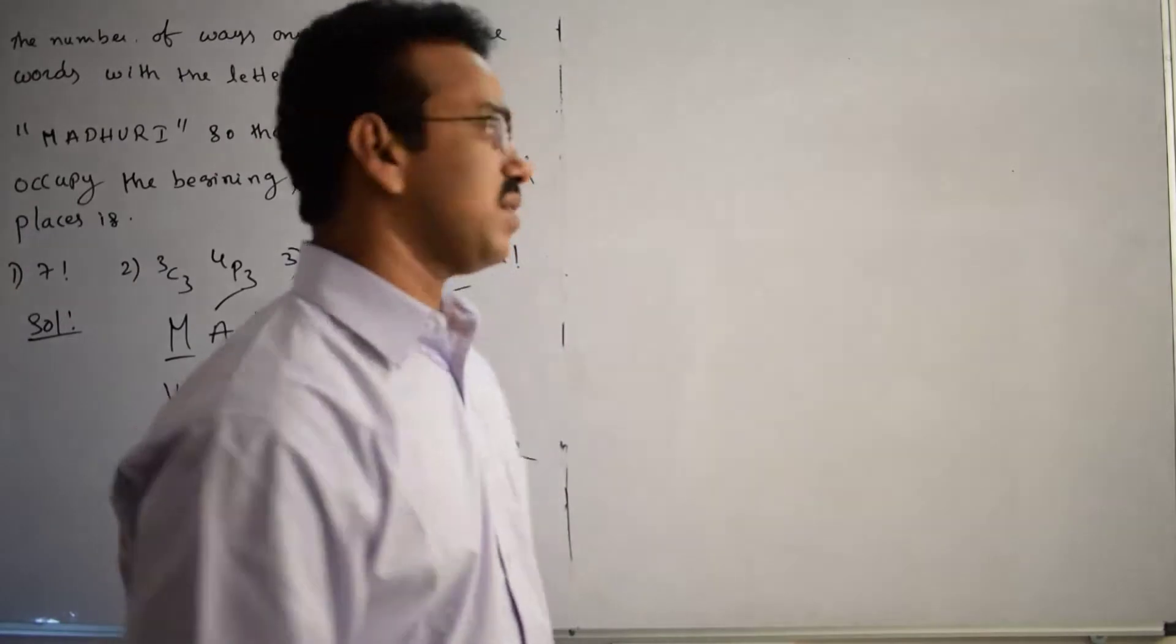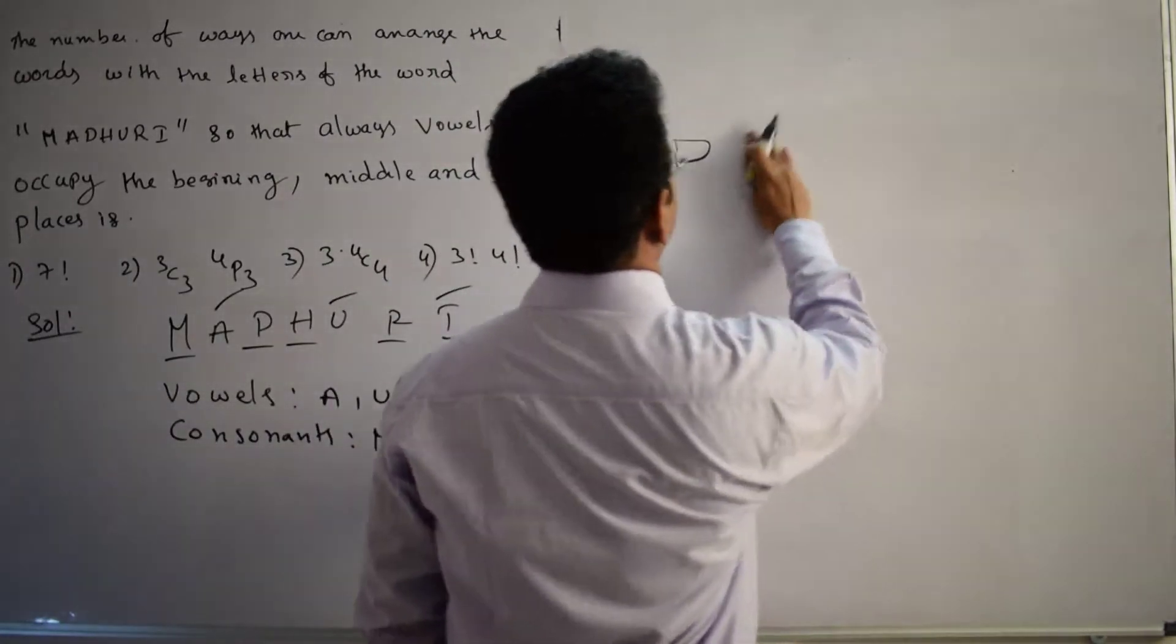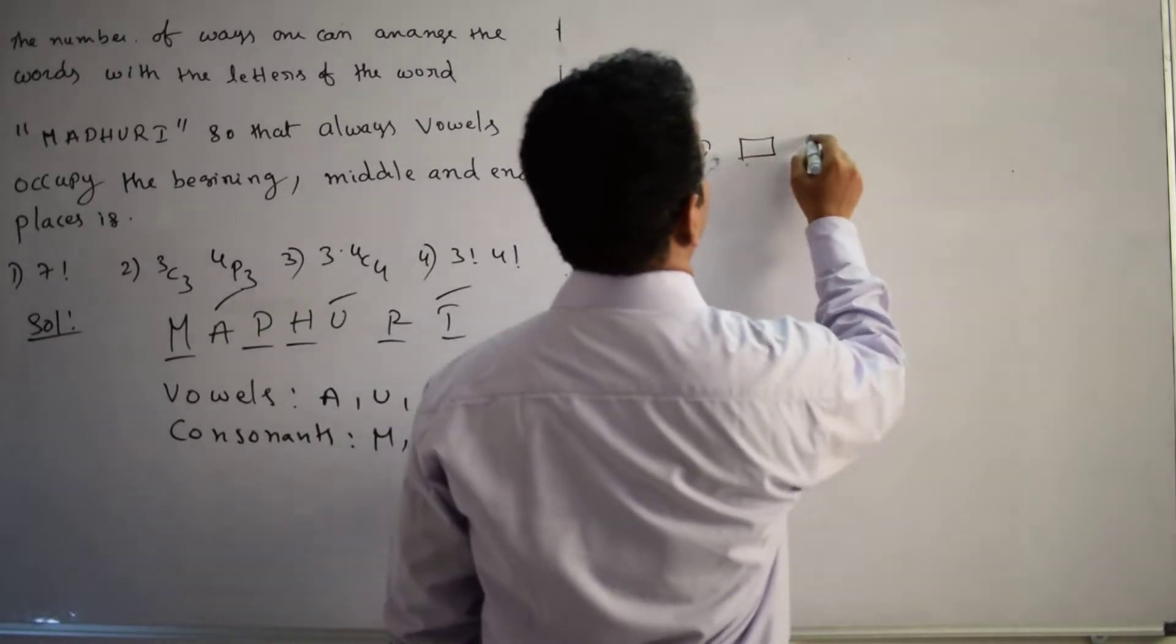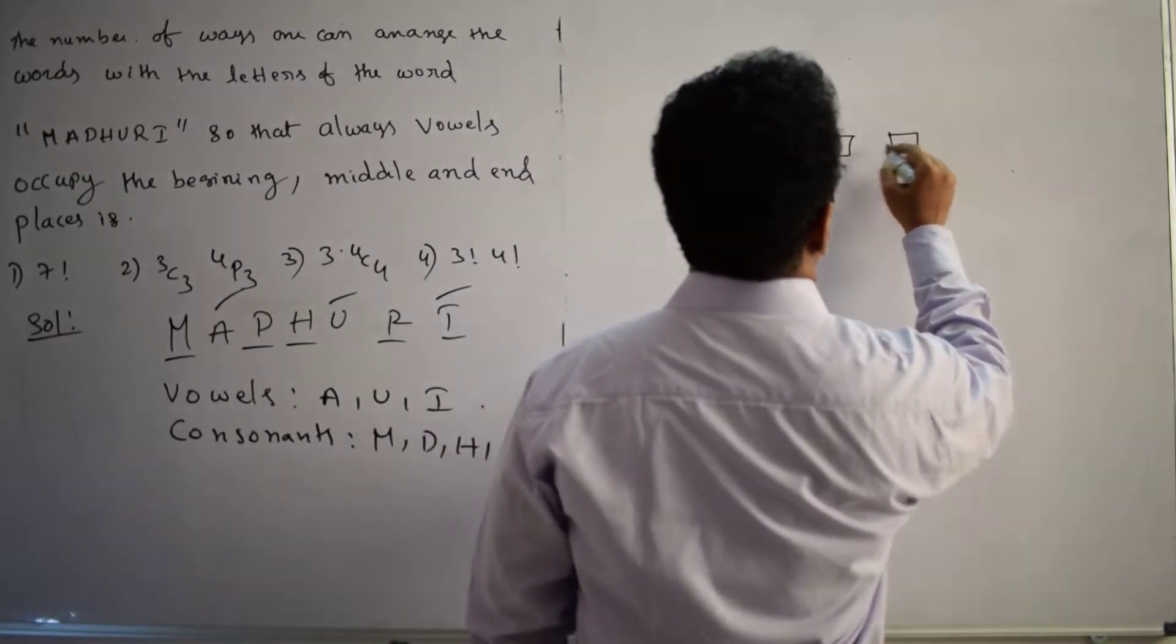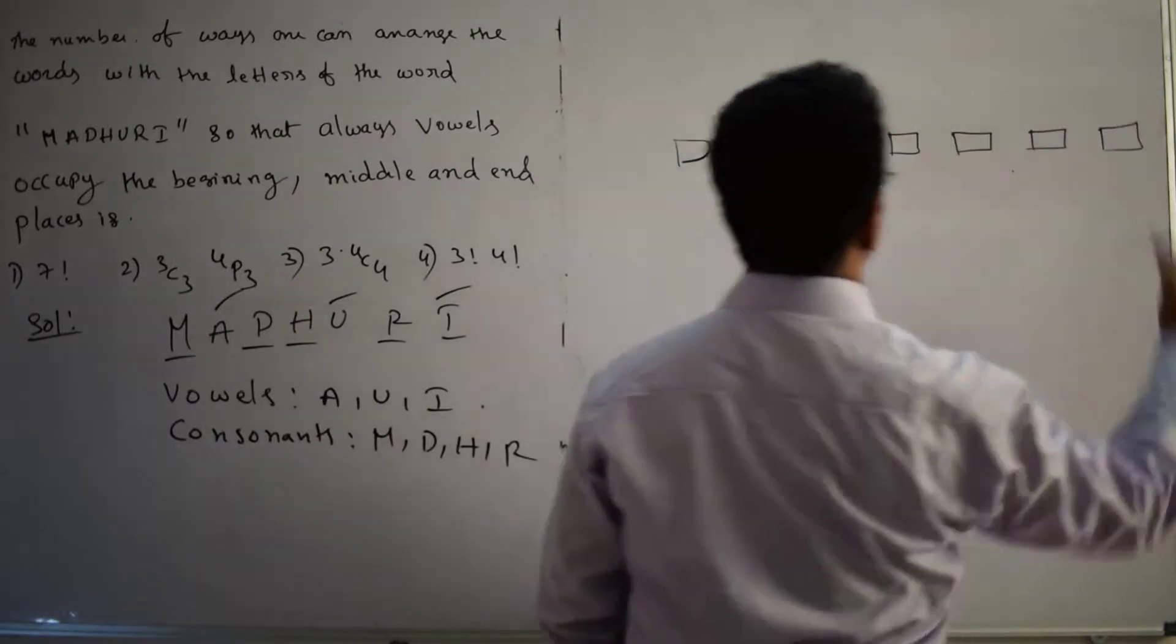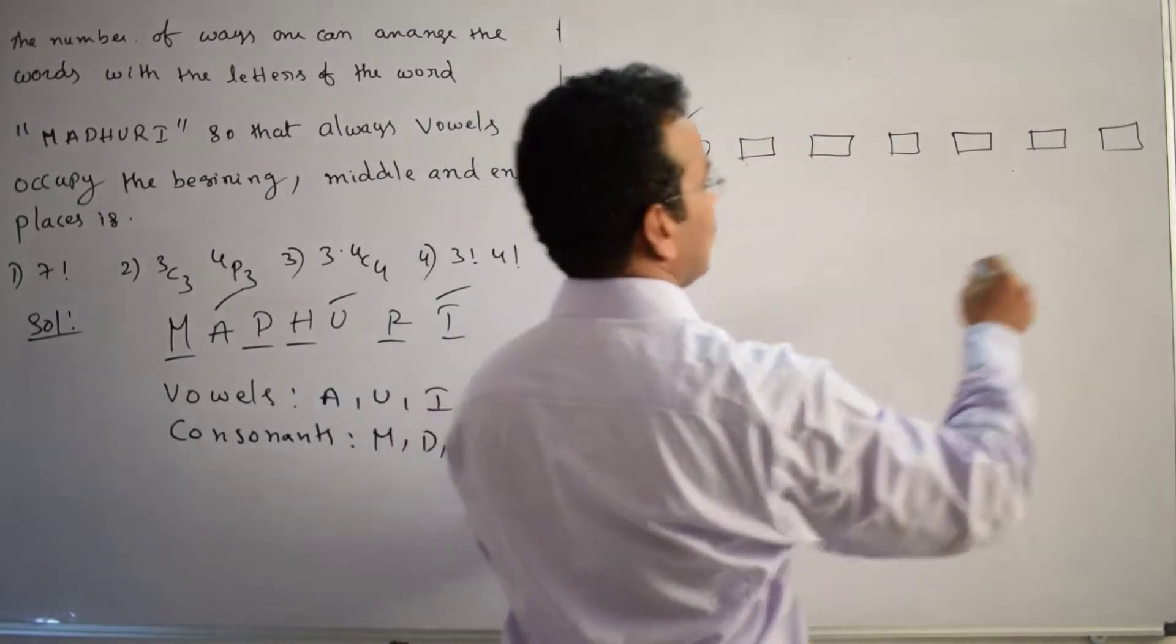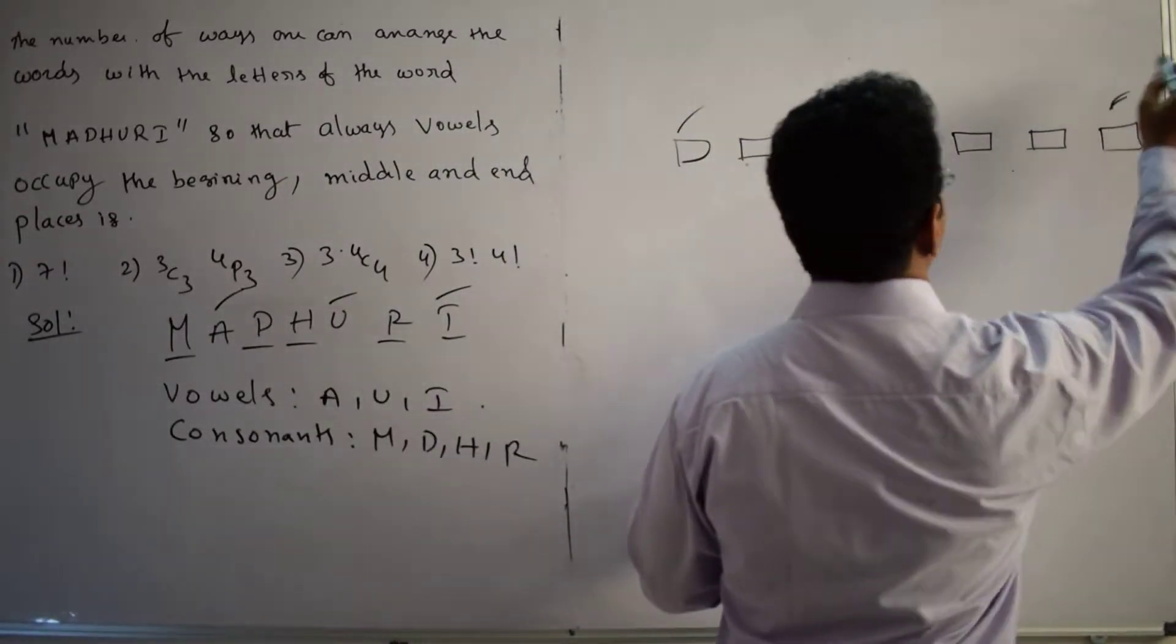How many letters total? Seven letters. Let me draw 7 boxes: 1, 2, 3, 4, 5, 6, and 7. These are the 7 boxes. This is the first box, and this is the middle box.